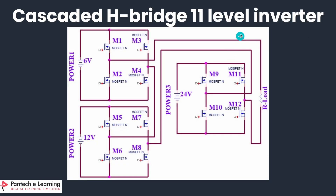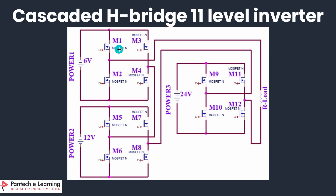Main circuit for cascaded H-bridge multilevel inverter. Here we are using three MOSFETs: 1, 2, and 3. For the first inverter we are giving 6 volt as input, for the second inverter 12 volt, and for the third we are giving 24 volt. Here the MOSFETs are designated as M1, M2, M3, and M4. Across this R load we can measure the output by using CRO.